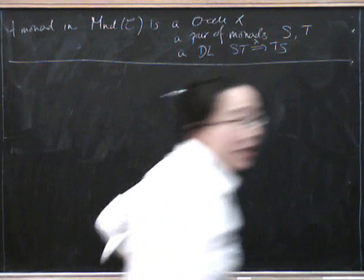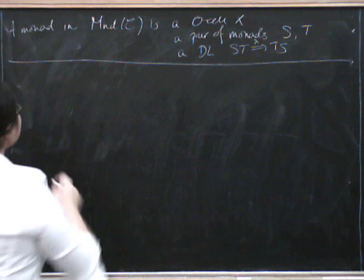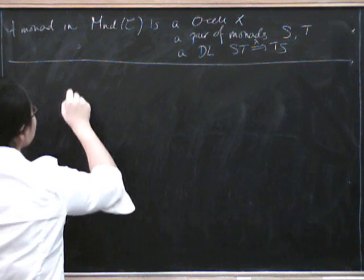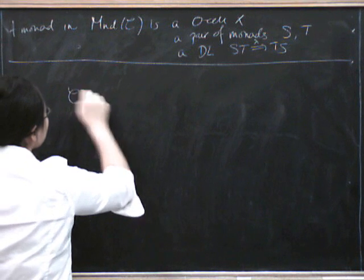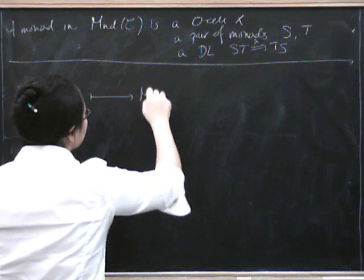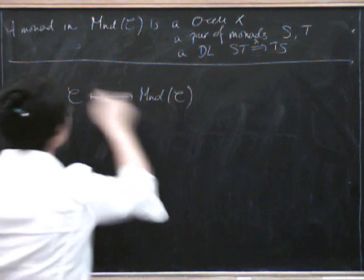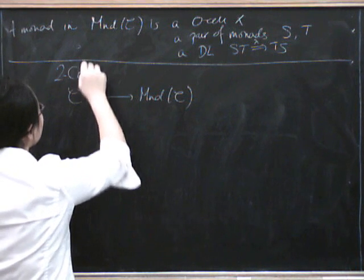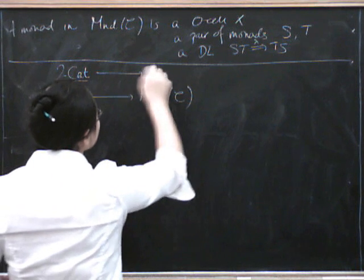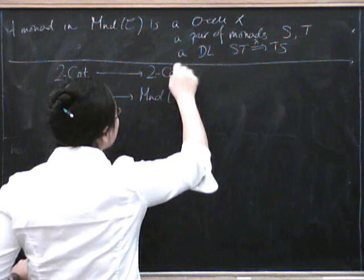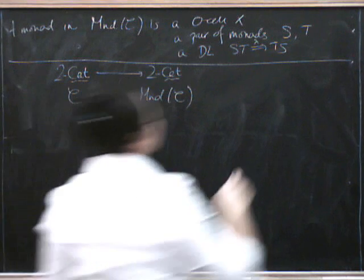Now, the punchline, or what I think is the punchline, is that we have something that takes C to monads in C. Right? This is a two-category, and this is a two-category. And in fact, this is a functor. So, from the category of two categories to the category of two categories, this is the category of two categories and strict two functors.